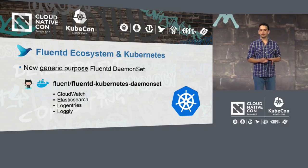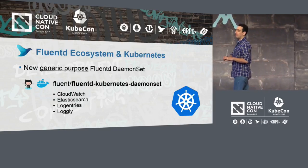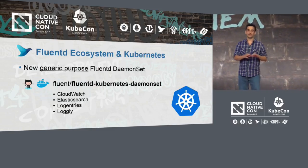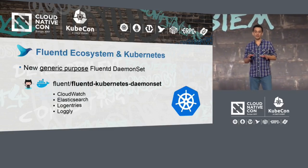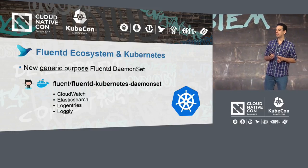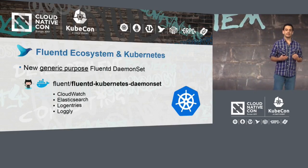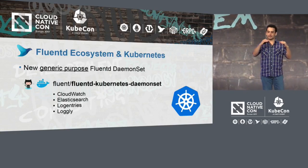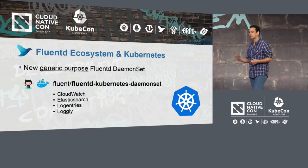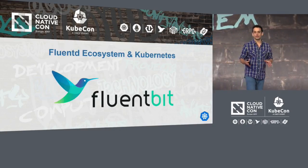The FluentD ecosystem also jumped into Kubernetes. For Kubernetes, we're trying to make logging simple and easy — as I said at the beginning, it's not like that, it's pretty hard, but we're trying to make it happen. We created a new DaemonSet, which is the way to distribute FluentD in a Kubernetes ecosystem, with a generic system and plugins for different backends — for example, CloudWatch, Elasticsearch, and Loggly. The FluentD ecosystem is growing.